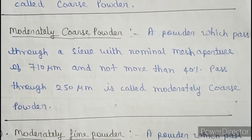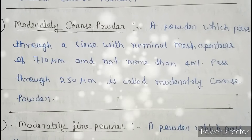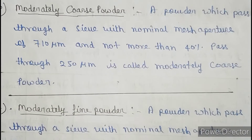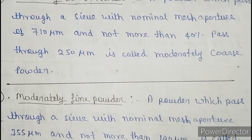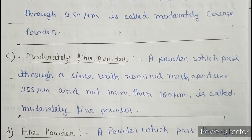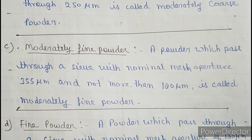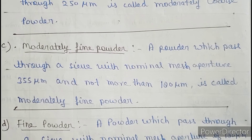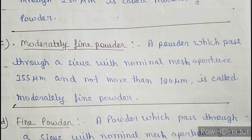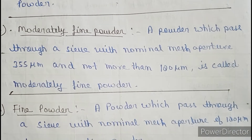Moderately fine powder is a powder which passes through a sieve with a nominal mesh aperture of 355 micrometers, and not more than 40 percent passes through 180 micrometers. This is called moderately fine powder.